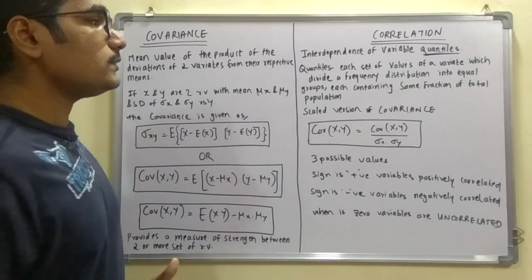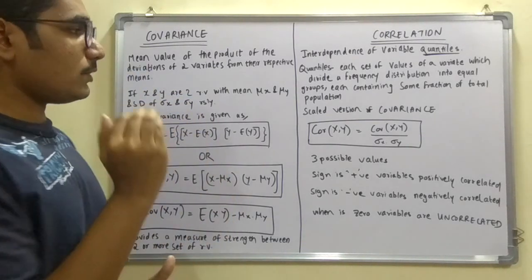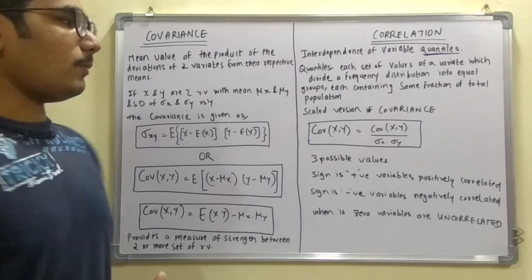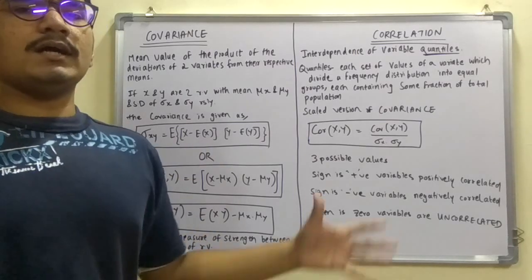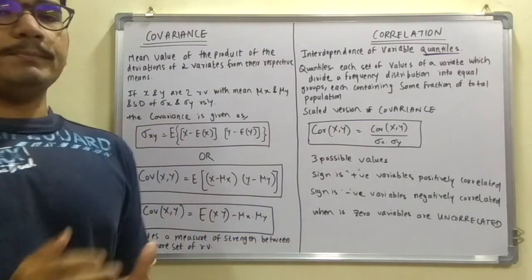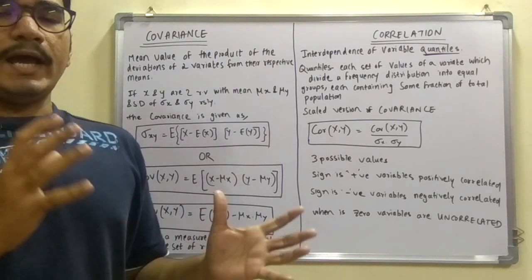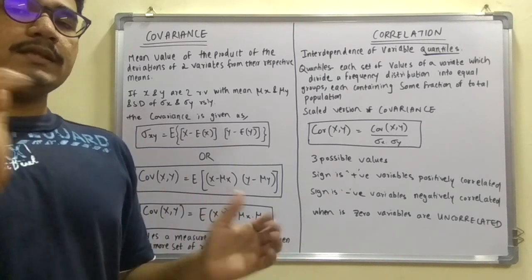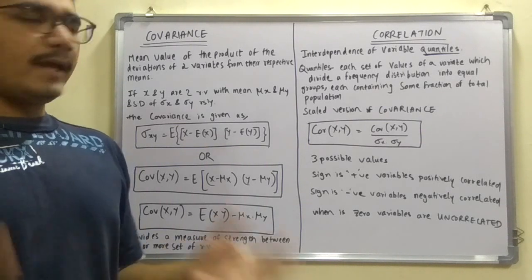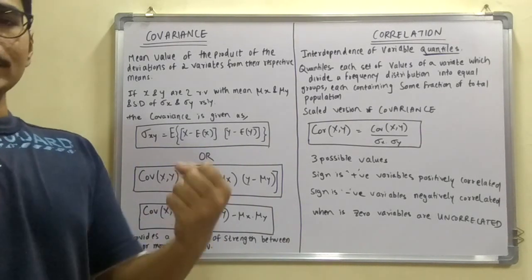Quantiles are a set of values of a variable which divide the frequency distribution into an equal number of groups, each containing the same fraction of the total population. For example, if a large crowd is classified into different age groups each having the same number of people, there is a strong relationship between those groups — this relates to correlation.